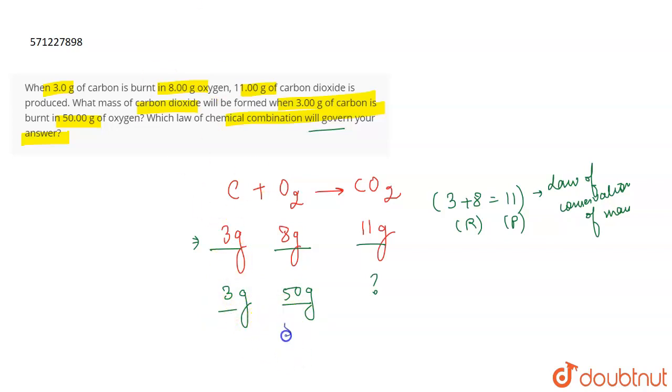The 3 gram of carbon is going to react, it is going to still react with 8 gram of oxygen only. Because as we saw in the above reaction, it was obeying the law of conservation of mass. It means that 3 grams react with 8 gram of oxygen only, which means that whichever amount you are taking for oxygen, only 8 gram of oxygen is going to be used when you are using 3 gram of carbon.